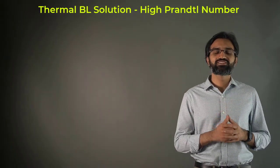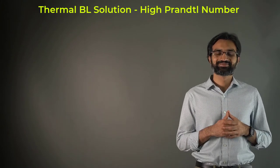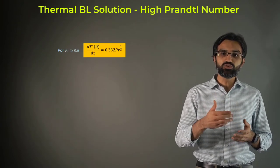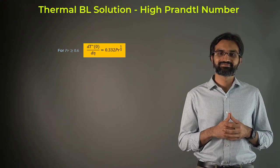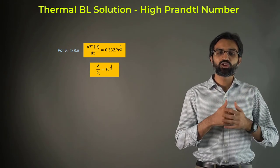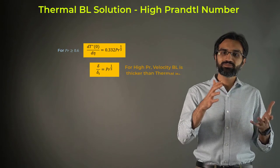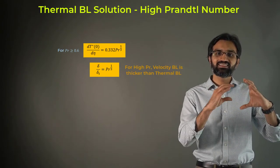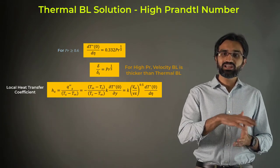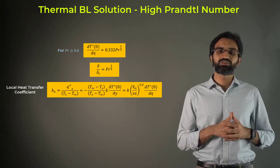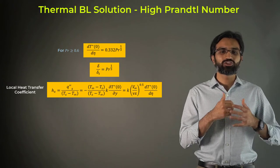Let us first consider fluids with Prandtl numbers greater than 0.6. Pohlhausen correlated the first derivative of T* at η = 0 using the following relationship, which is used to determine the boundary layer thickness. When this is compared to the hydrodynamic boundary layer thickness for a laminar flow, we obtain the following ratio. If the fluid Prandtl number is high, the hydrodynamic boundary layer is thicker than the thermal boundary layer. The local heat transfer coefficient is expressed in terms of the first derivative of temperature at η = 0, and the following relationship is obtained.